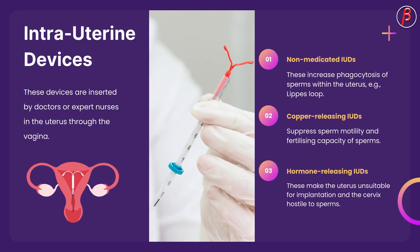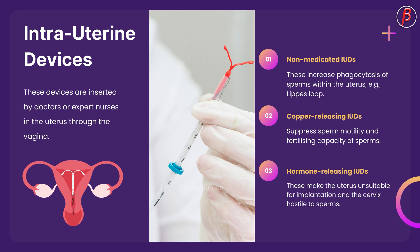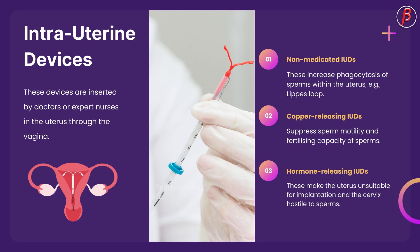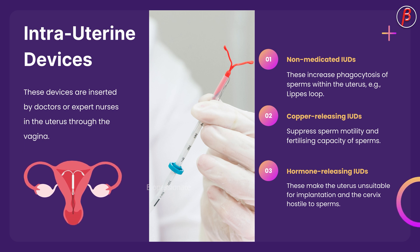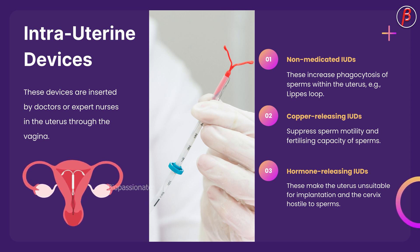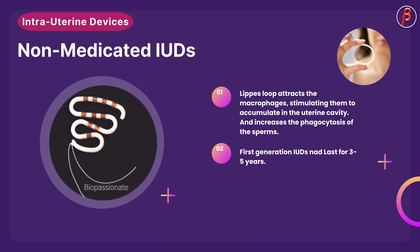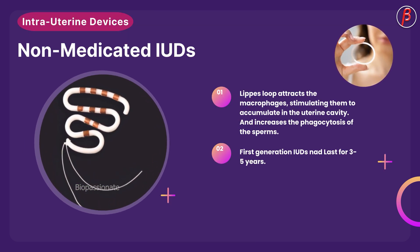Intrauterine devices are inserted by doctors or expert nurses in the uterus through the vagina. There are three categories of IUDs: non-medicated IUDs, copper-releasing IUDs, and hormone-releasing IUDs. Non-medicated IUDs increase phagocytosis of sperms within the uterus. Copper-releasing IUDs suppress sperm motility and fertilizing capacity. Hormone-releasing IUDs make the uterus unsuitable for implantation and the cervix hostile to sperms.